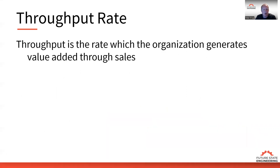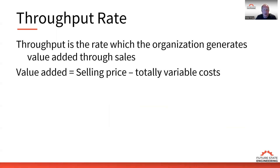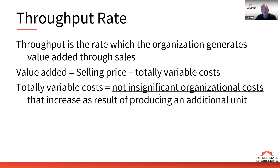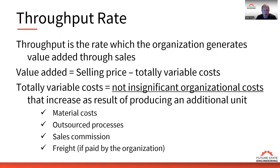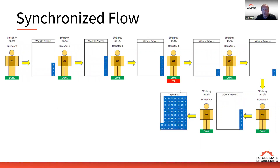The throughput rate is the rate at which the organization generates value added through sales. The value added is the selling price minus the totally variable cost, and material makes up one of the totally variable costs. Totally variable costs are costs that increase as a result of producing an additional unit. The four elements of totally variable cost are materials, outsourced processes, sales commission, and freight.